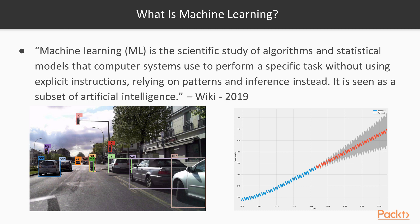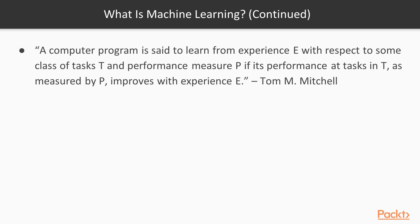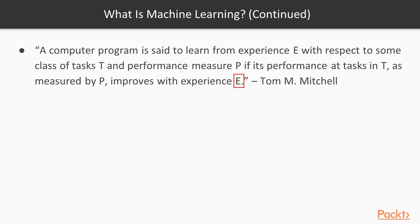Here we can see the COT forecasts in the future. The more canonical definition of machine learning today is defined by Tom Mitchell: a computer program is said to learn from experience E, with respect to some class of tasks T and performance measure P, if its performance at tasks in T, as measured by the performance measure, improves with experience E. Essentially, this means that the algorithm improves with more experience.